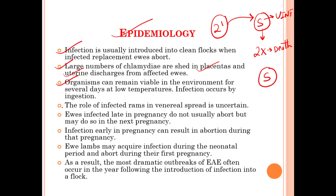The role of infected rams in venereal spread is uncertain; transmission via coitus for Chlamydophila abortus is considered very low. Ewes infected late in pregnancy do not usually abort but may do so in the next pregnancy. Infection early in pregnancy can result in abortion during that pregnancy. Ewe lambs may acquire the infection during the neonatal period and abort during the first pregnancy.